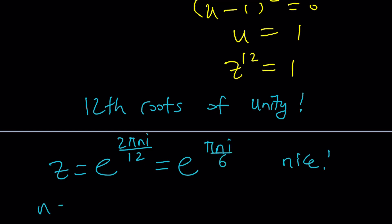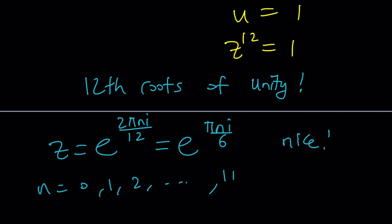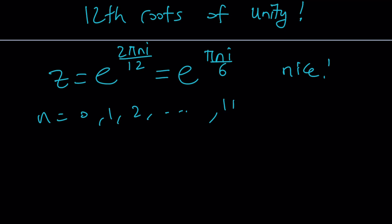And here, n equals 0, 1, 2, dot dot dot, all the way up to 11. After 11, it's going to repeat because this is a cycle. Let me show you a couple things. And then we'll finish up.